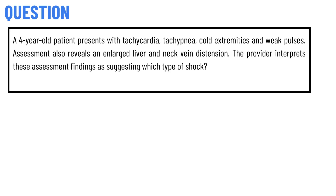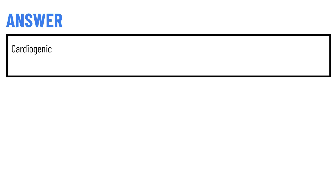A four-year-old patient presents with tachycardia, tachypnea, cold extremities, and weak pulses. Assessment also reveals an enlarged liver and neck vein distension. The provider interprets these assessment findings as suggesting which type of shock? The correct answer of the question is...